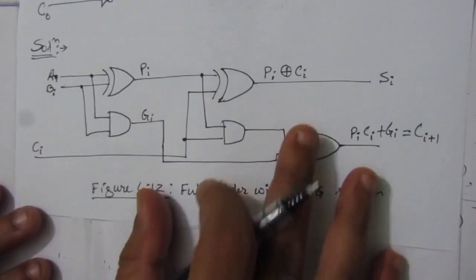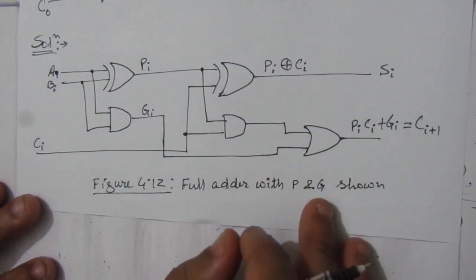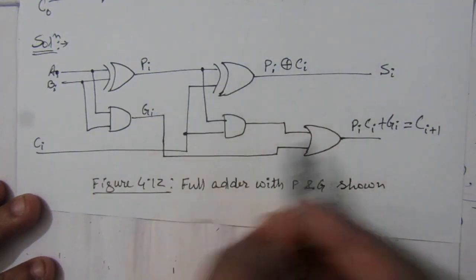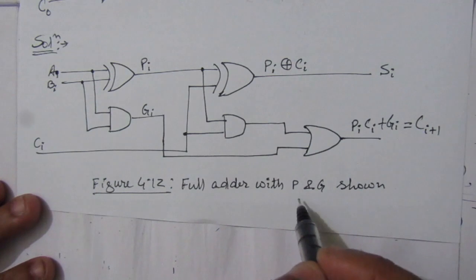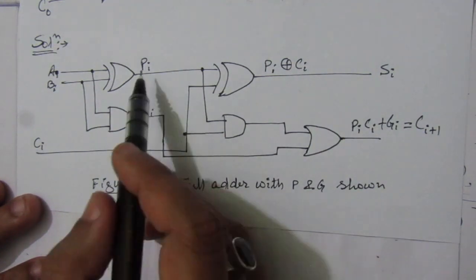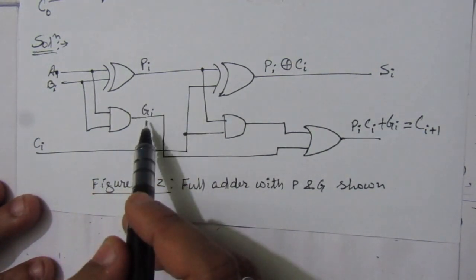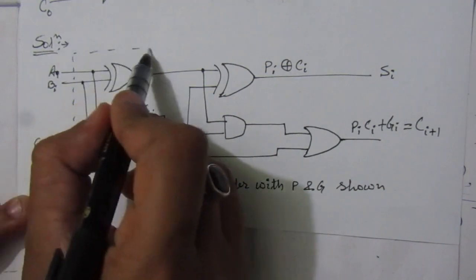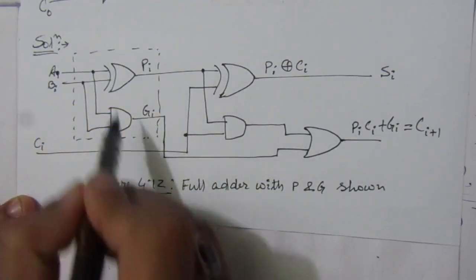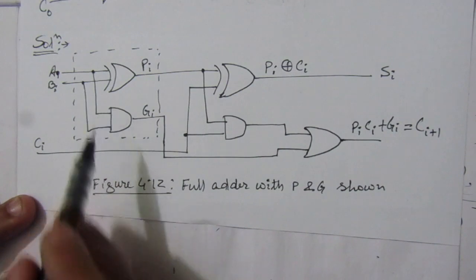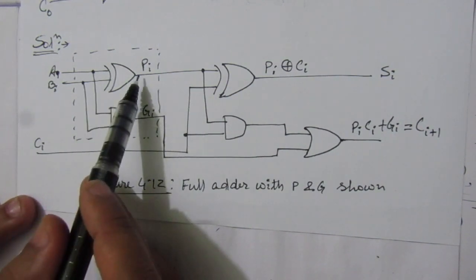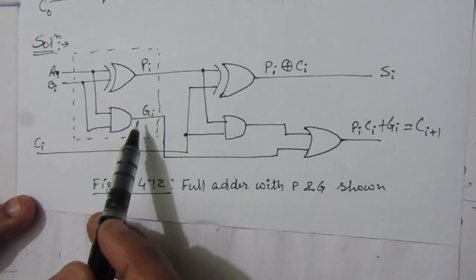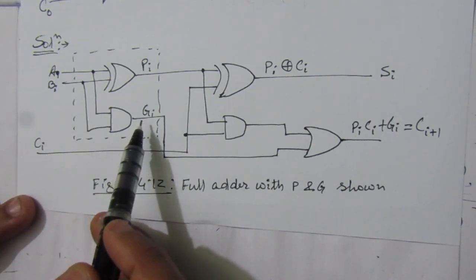In the first part, let us see the carry propagate and carry generate circuit of a full adder, from inside of chapter 4.12. This is the circuit of a full adder using propagate and carry generate. Inside the dotted box is a half adder circuit, because we do not have a carry here. We can see it is the addition of these two inputs, and G_i is the carry output.